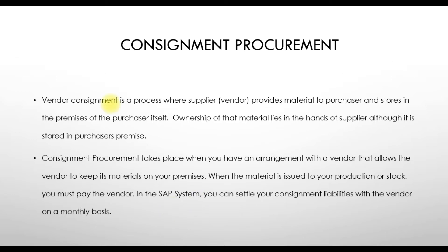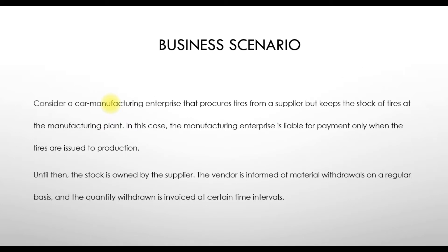Consider a business scenario: a car manufacturing company that procures tires from a supplier but keeps the stock of tires at the manufacturing plant. In this case, the manufacturing enterprise is liable for payment only when the tires are issued to production. Until then, the stock is owned by the supplier. The vendor is informed of material withdrawals on a regular basis, and the quantity withdrawn is invoiced at certain time intervals.